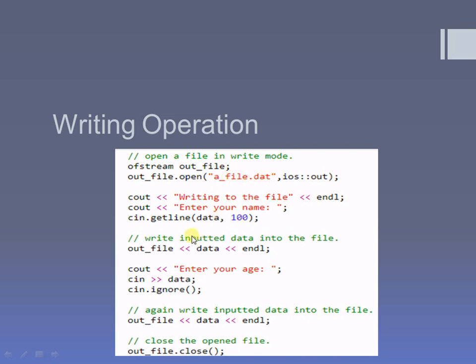You have to keep in mind that the out_file file pointer is not incremented externally — it advances to the next position automatically. At the end, after performing all required tasks, it is best practice to close the file. What happens after closing the file is already explained in my previous video on the close function. It releases the memory, and here I am closing a_file.dat, which is associated with the out_file file pointer. In this way, we can perform the write operation onto the file.